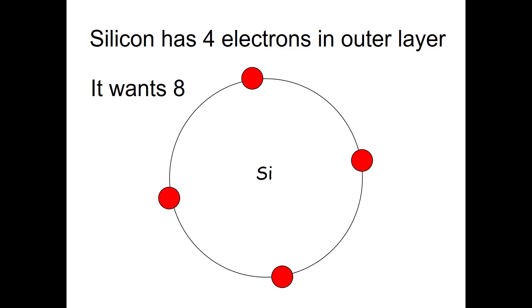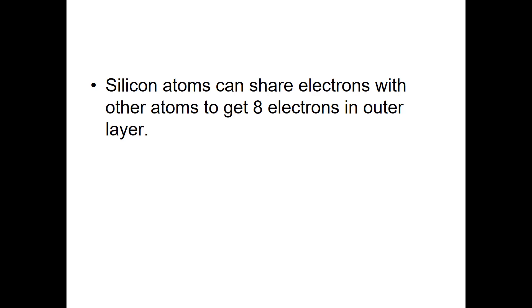What silicon atoms do to stabilize themselves is to try to share electrons with other atoms so that they can get eight electrons in their outer layer. They combine together to form crystals of silicon, all sharing electrons with each other.